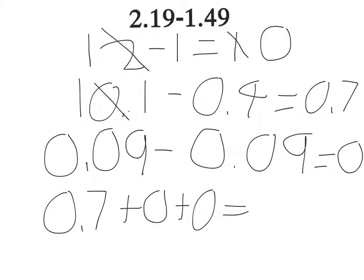The final answer to 2 and 19 hundredths minus 1 and 49 hundredths is 0 and 7 tenths.